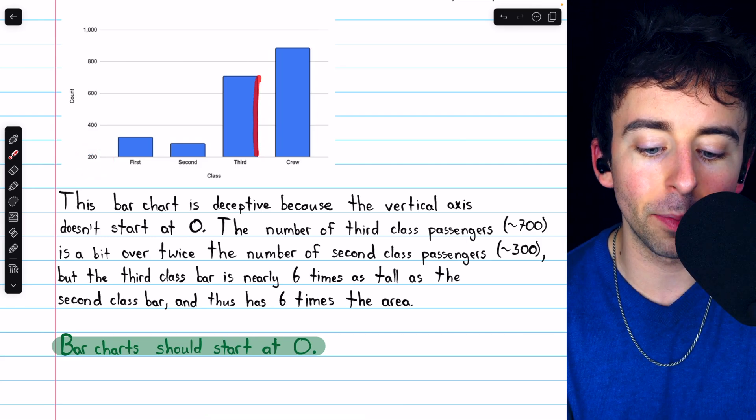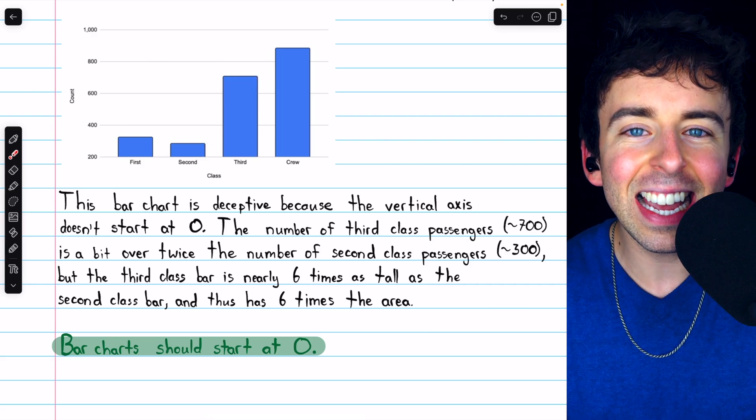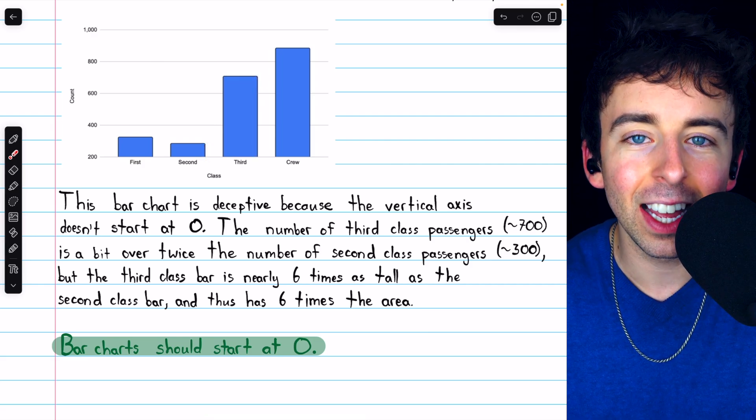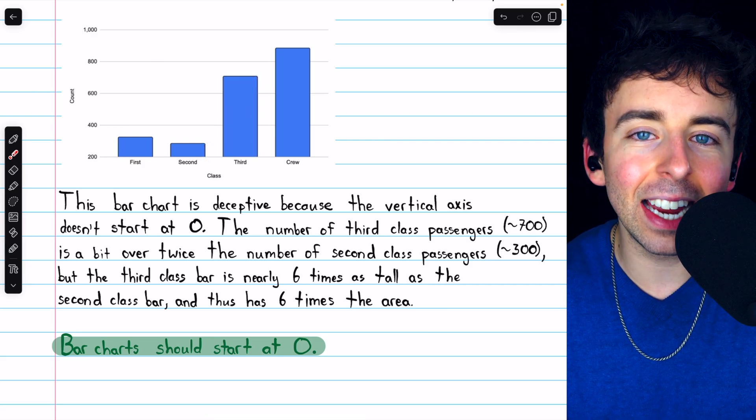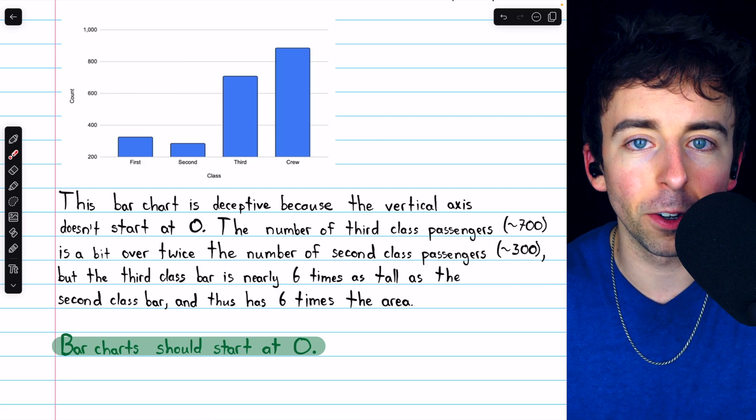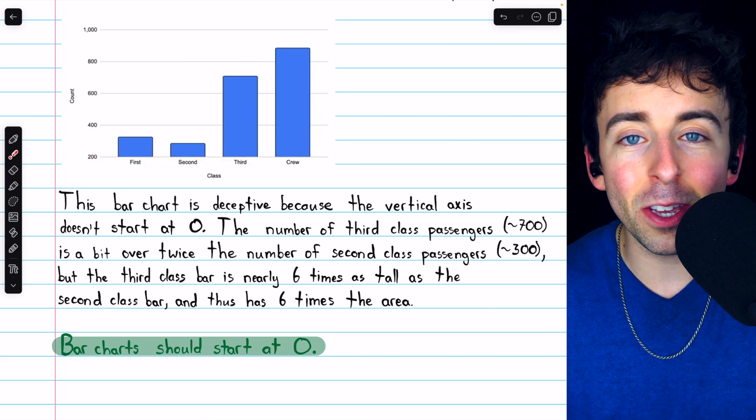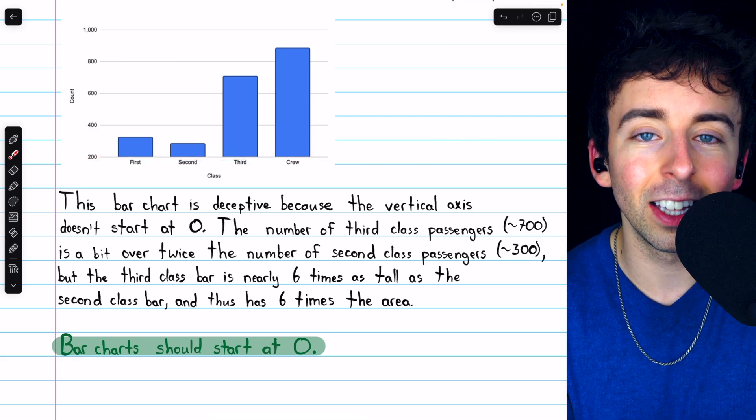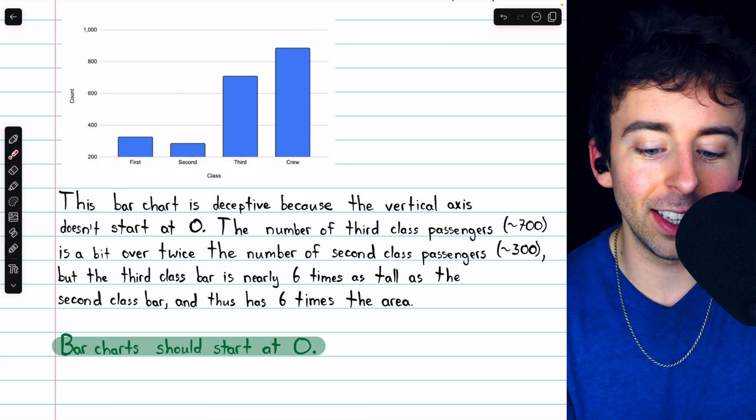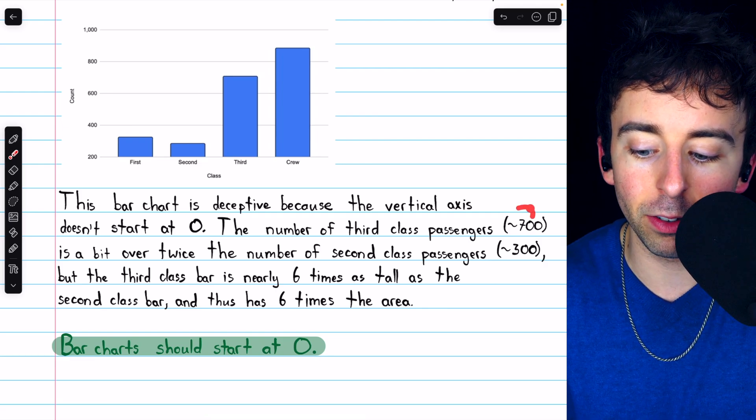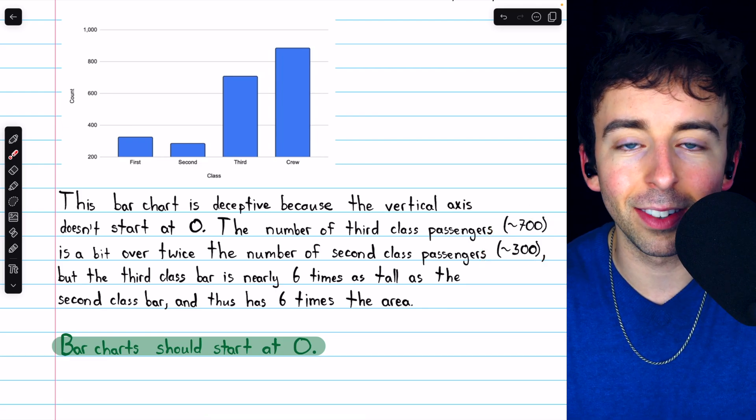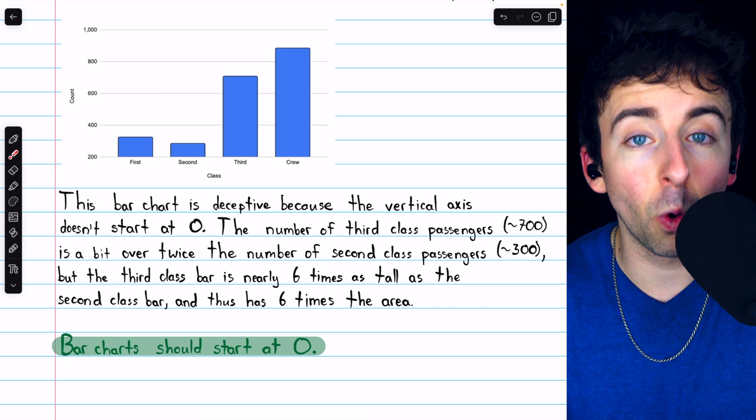And of course, since it's six times taller, and these are rectangles, it has six times the area. Again, leaving a completely incorrect impression on the reader. This mistake, or trick, of not starting the vertical axis at zero can be used to make very small differences look dramatic. Just like in this case, it made a medium difference between the number of third class and second class passengers look quite large.